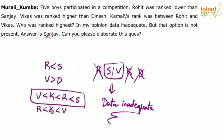But in the second case, what happens? We can say Sanjay comes here also. The only point is Rohit was ranked lower than Sanjay, so can Sanjay not come between Kamal and Vikas, or between Rohit and Kamal?